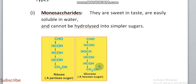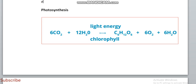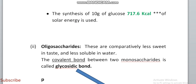Monosaccharides cannot be hydrolyzed into simpler sugars because these are the simplest form of sugar. They may be pentose sugar or hexose. This is the formula. The equation of photosynthesis is very important — it is a repeated question, so we have to memorize it properly. The synthesis of 10 grams of glucose requires 717.6 kilocalories of solar energy.